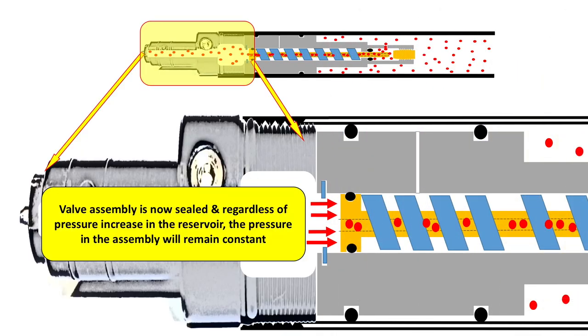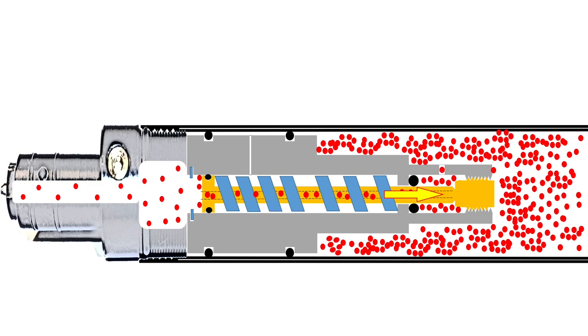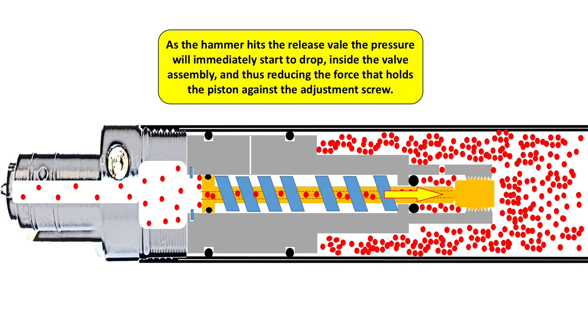When this happens, let's now go back to the valve assembly. The valve assembly will now be sealed, regardless of the pressure increase inside the reservoir. It just remains constant—it's sealed off. And no matter how much air you put in, you can go to 200, 250, or 300 bar, whatever your cylinder is rated for, it does not matter. The pressure in the valve assembly remains at the preset value. It cannot enter—it's sealed shut.